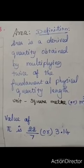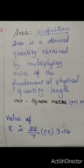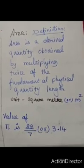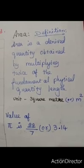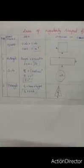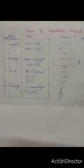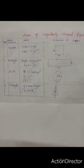Area is a derived quantity obtained by multiplying twice the fundamental physical quantity length. The unit of area is square meter or meter square. Students, you have learnt about fundamental quantities, their units, and derived quantities with their units. Now we have to learn about area — how to find area of regularly shaped figures. Square, rectangle, circle, and triangle are some regularly shaped figures.